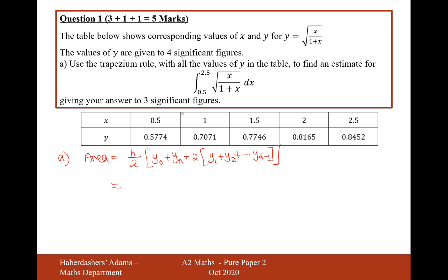So the h, h in this case here is the height, it's effectively the width of each bar. So that's going to be 0.5 divided by 2. y0 is this y value here, yn is this value here, in this case it's y5.